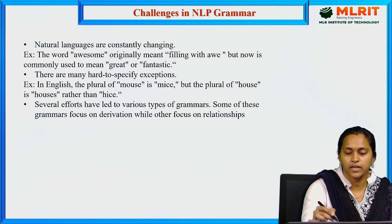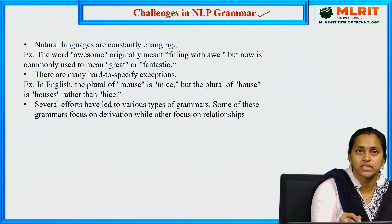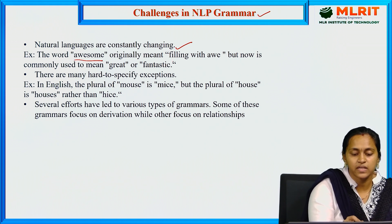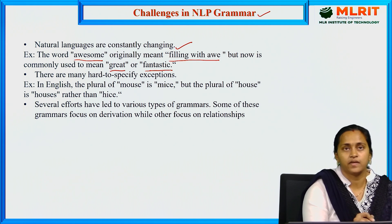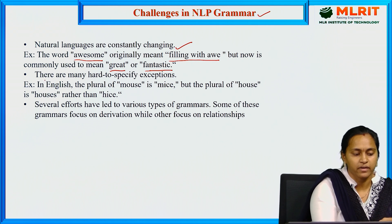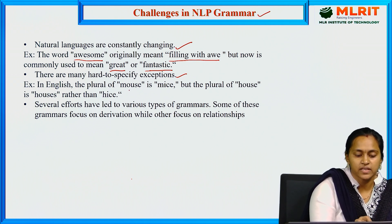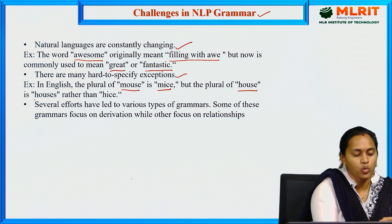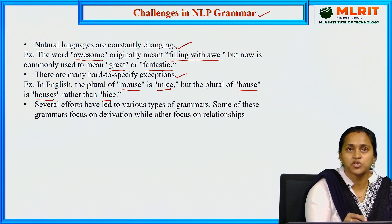The challenge in NLP grammar: the first and basic challenge is that natural languages are constantly changing. A real-time example is the word 'awesome' — originally meaning 'filling with awe,' but now commonly used to mean 'great' or 'fantastic.' There are also many hard-to-specify exceptions, for example the plural of 'mouse' is 'mice,' but the plural of 'house' is 'houses.' It is very hard to specify this type of exception.